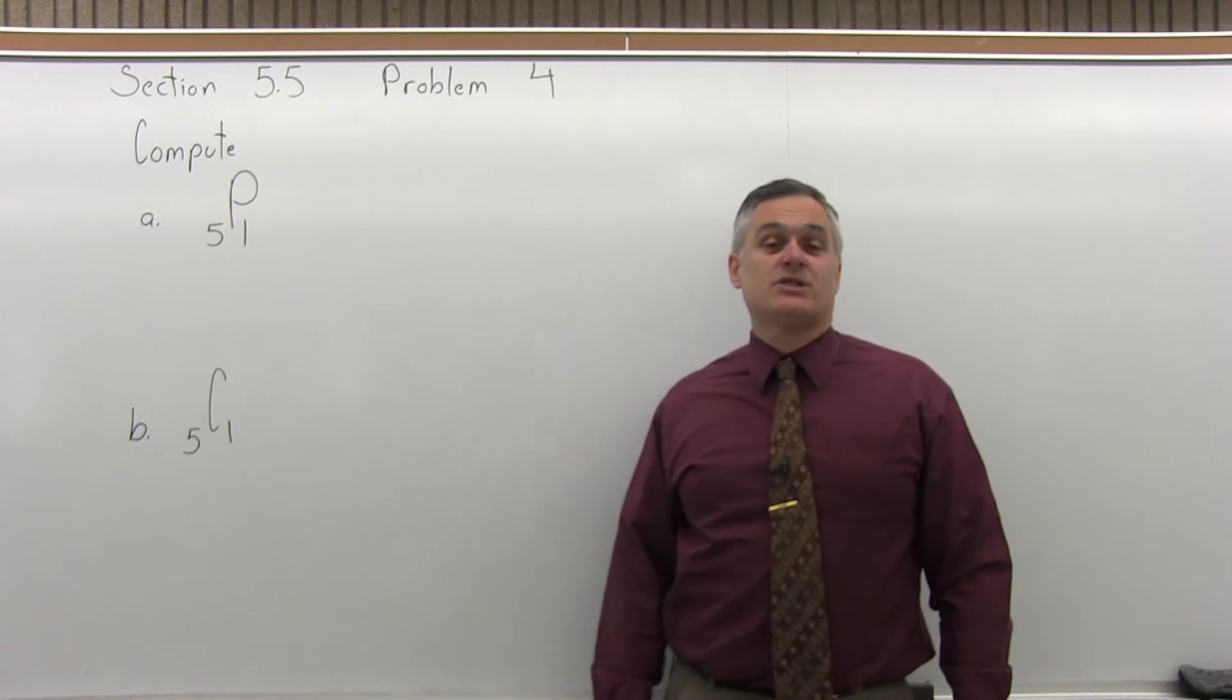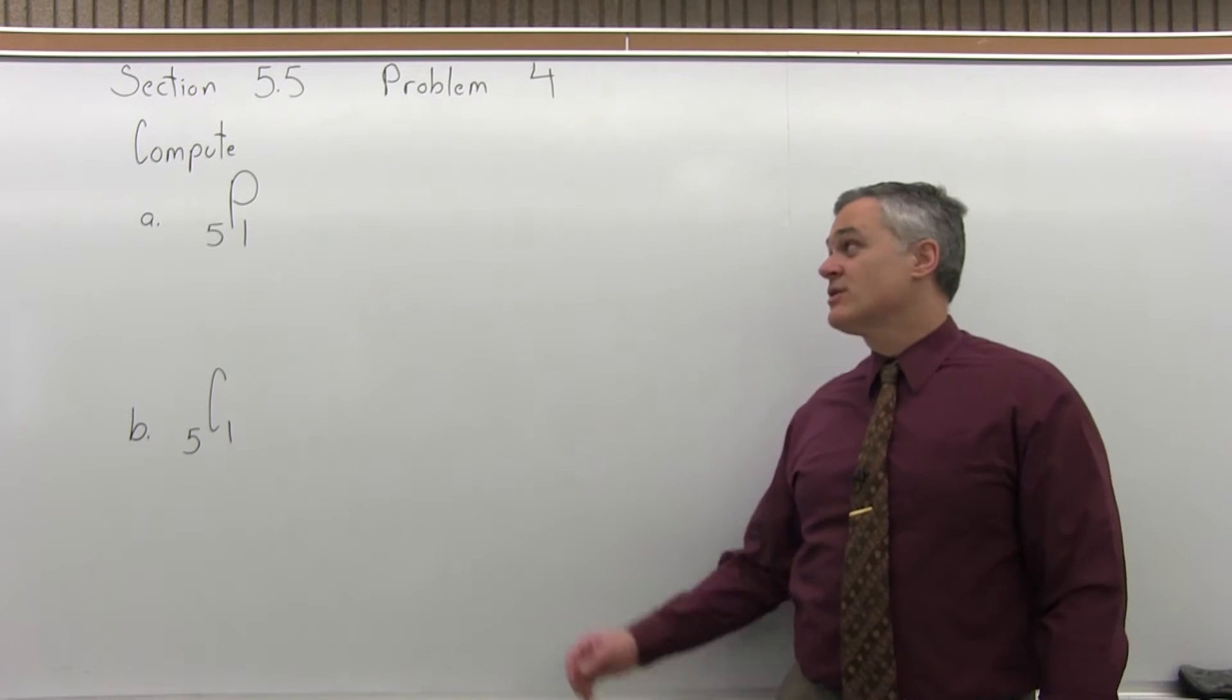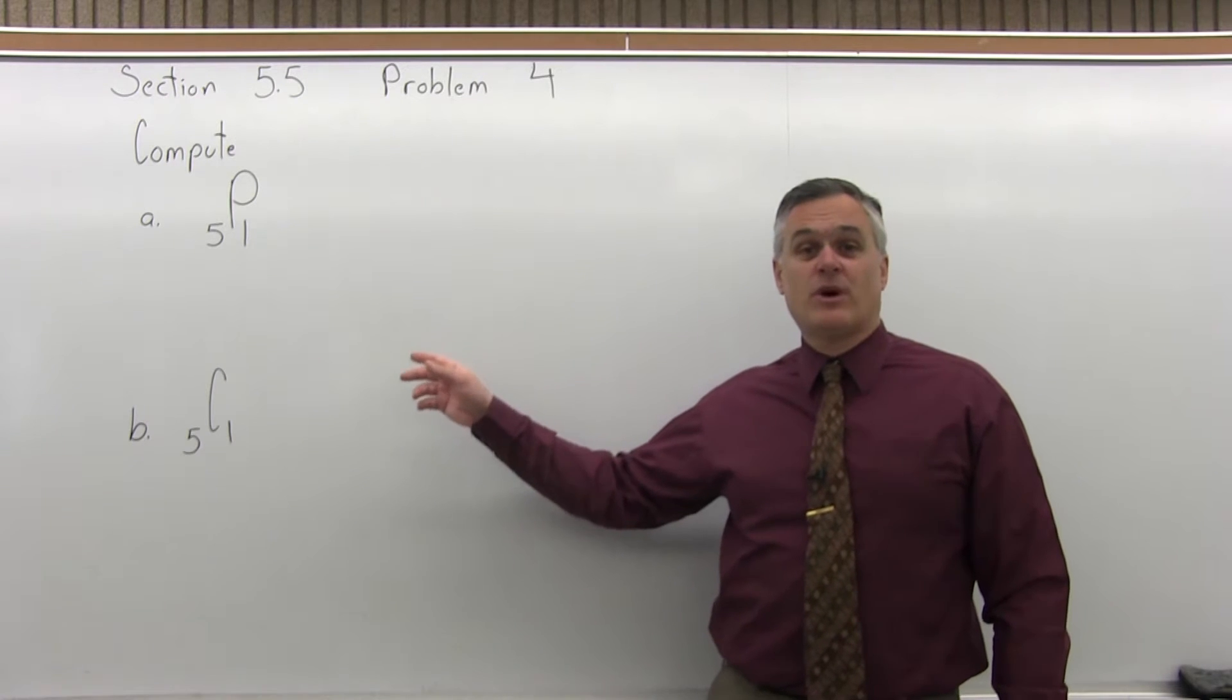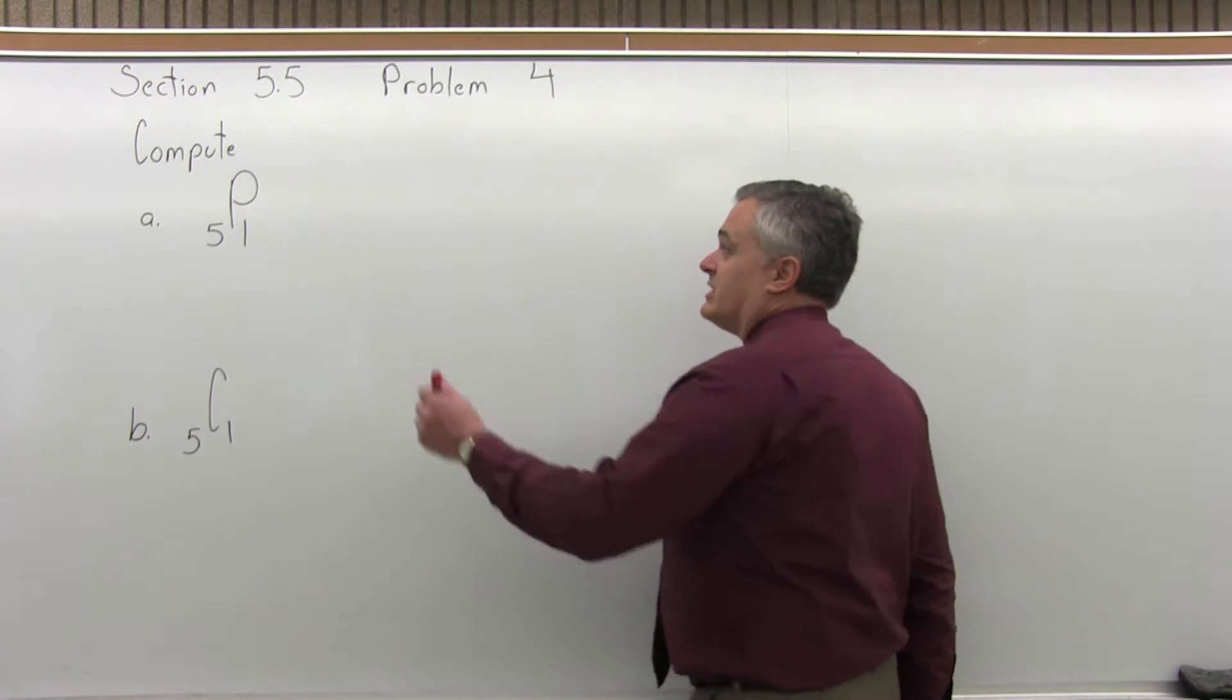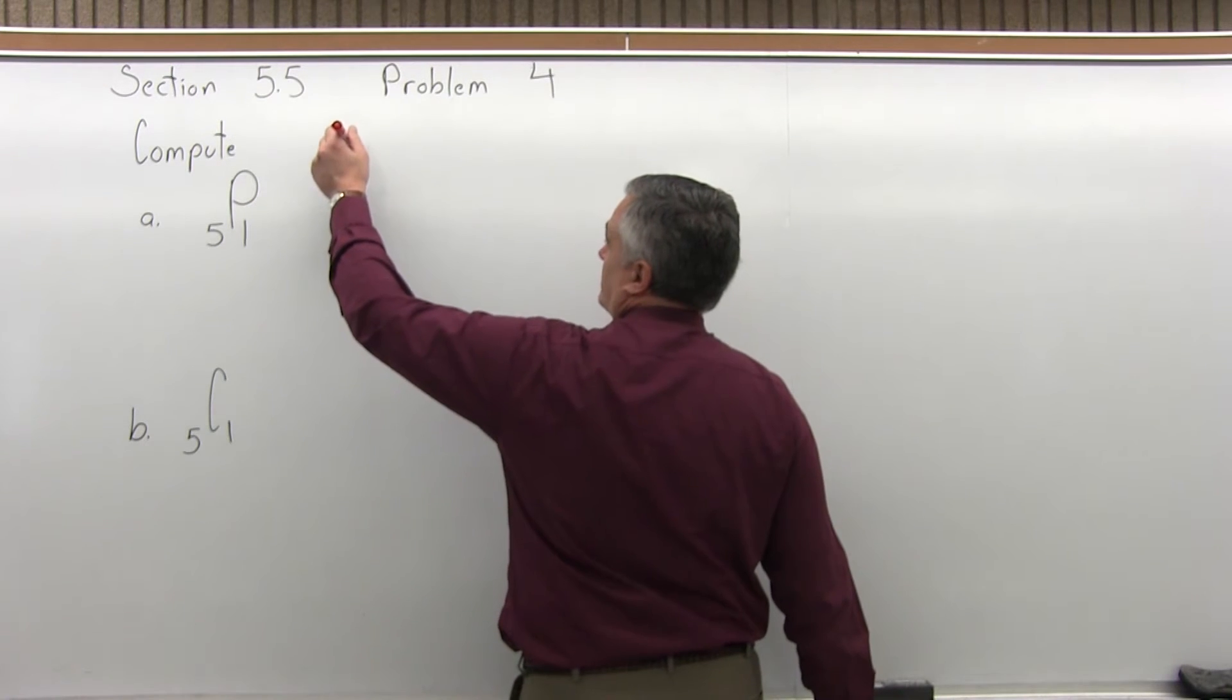This is Section 5.5, Problem number 4. It asks us to compute 5 permutation 1 and 5 combination 1. So for the permutation, first we have to have the permutation formula.